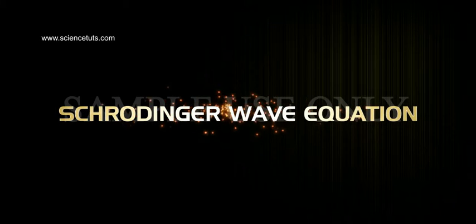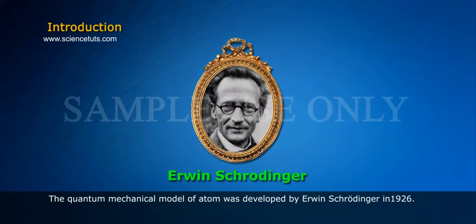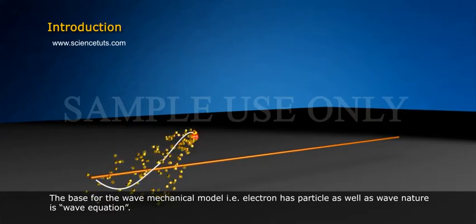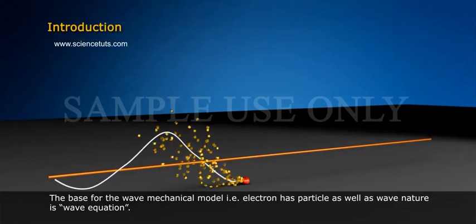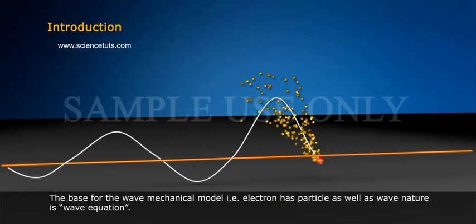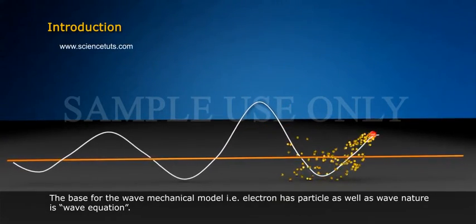Schrodinger Wave Equation. The quantum mechanical model of atom was developed by Erwin Schrodinger in 1926. The base for the wave mechanical model, i.e., electron has particle as well as wave nature, is wave equation.